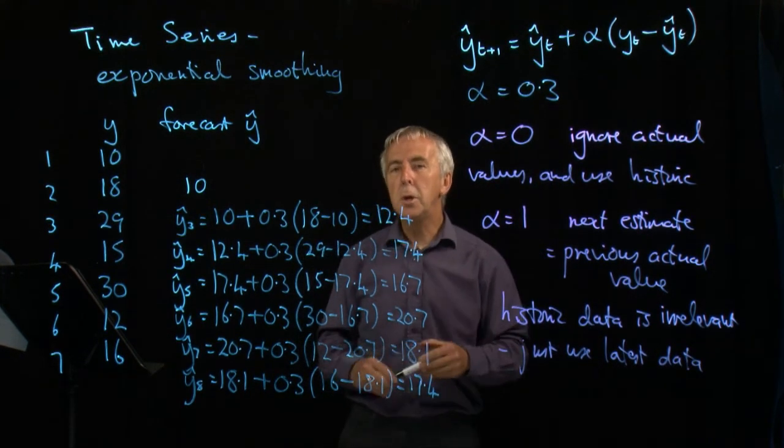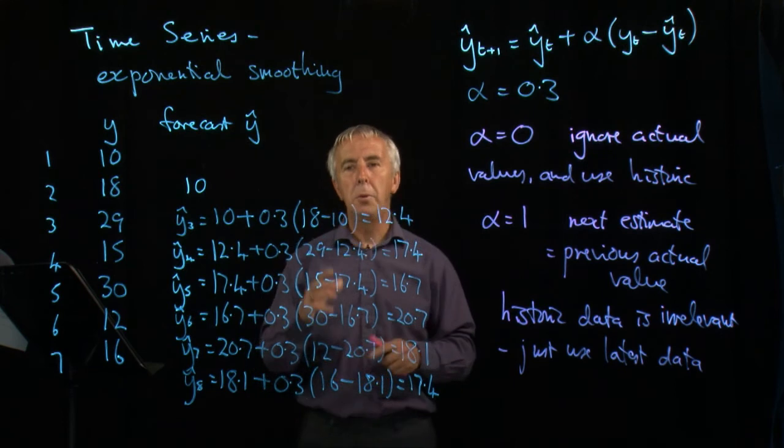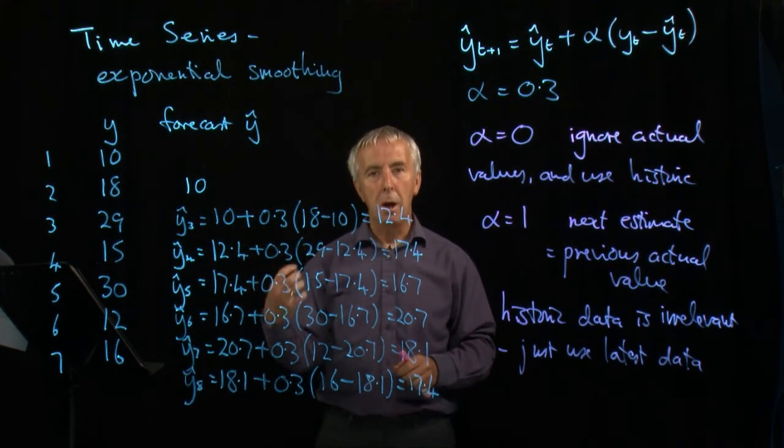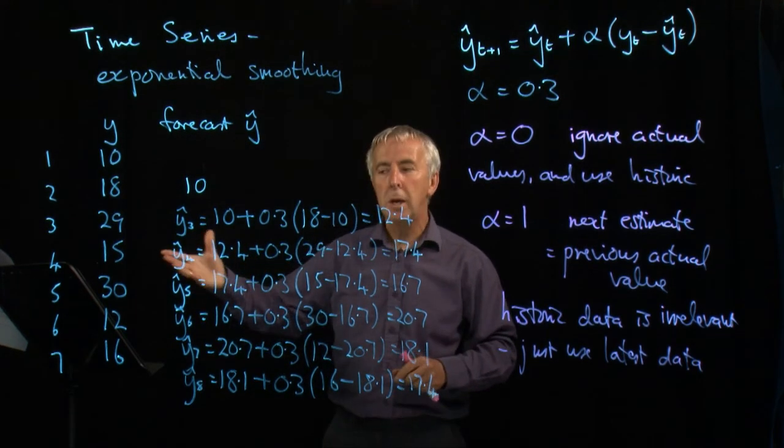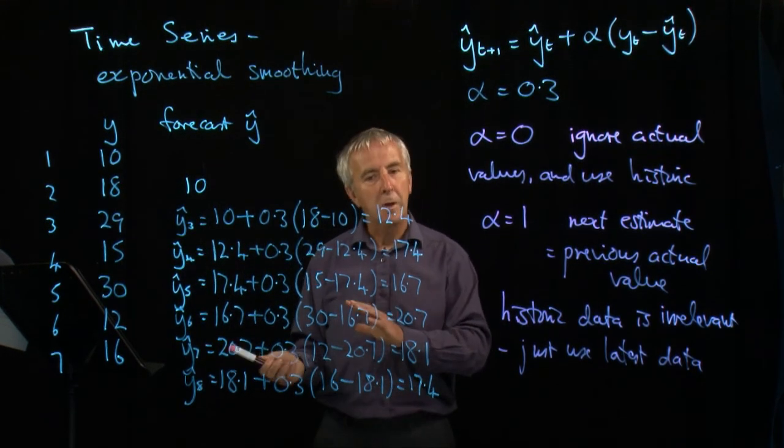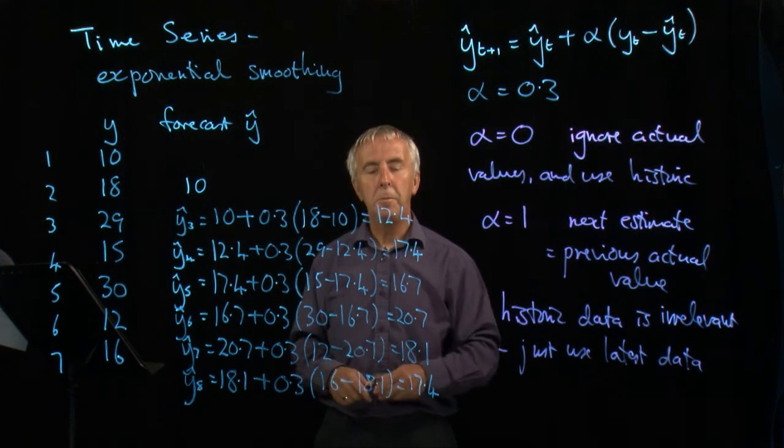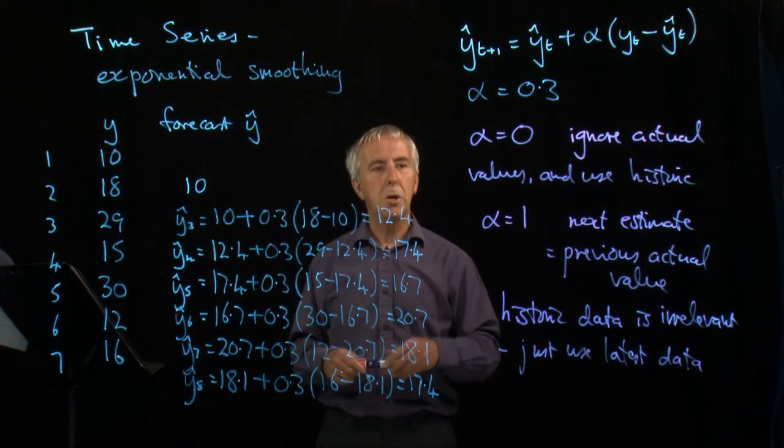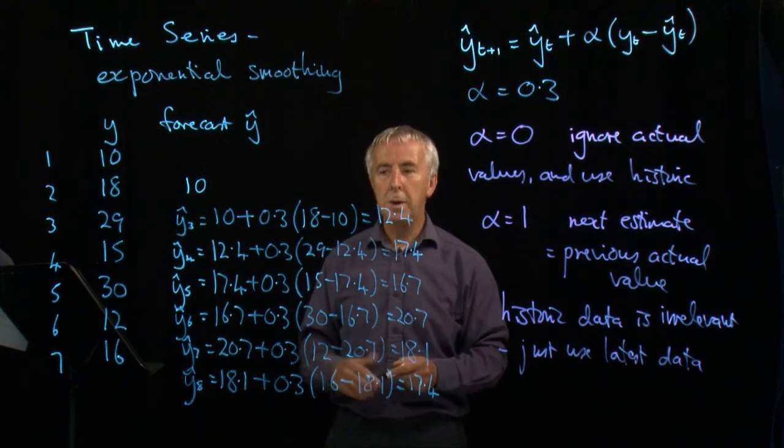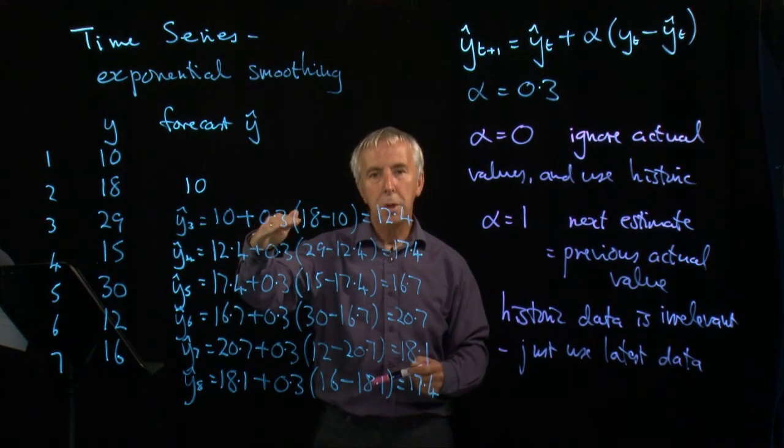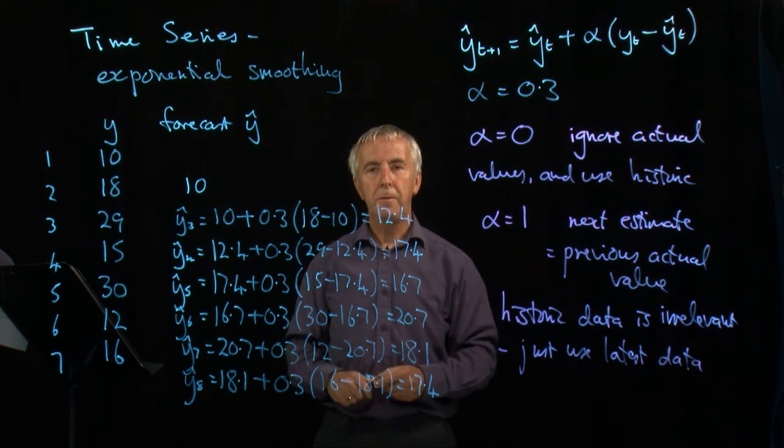And so you have to make a value judgment. How important is historic data? How reliable is last year's data? Might it need updating when the final figures come in? Or is it pretty firm? Once you've made that decision, you choose a value of alpha somewhere between 0 and 1. And then this is the method that enables you to make those following forecasts.